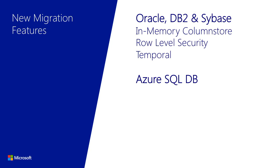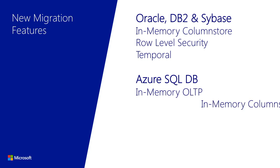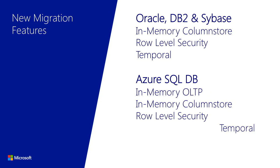SSMA 6.0 already supports migrating in-memory OLTP tables to SQL Server 2014, and this feature is still present for SQL Server 2016. If you're migrating to Azure SQL Database, there are many new features inside Azure SQL Database added over the past year. With this version of SQL Server Migration Assistant, we now offer the ability to migrate — just as we did with on-premises — in-memory OLTP, in-memory column store, row level security, temporal, and sequences. All of these new features now make it an easier migration path from your existing foreign platform databases to either SQL Server 2016 or Azure SQL Database.